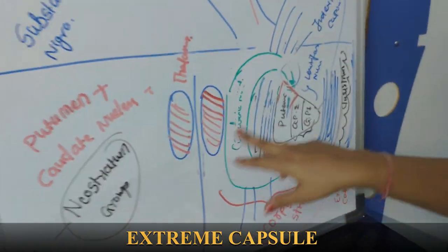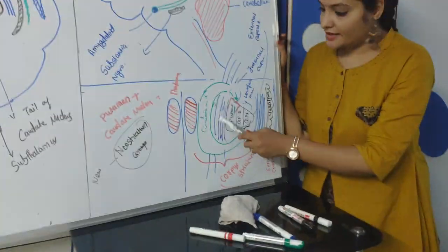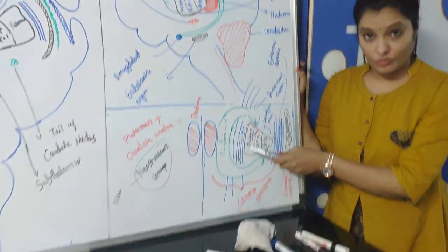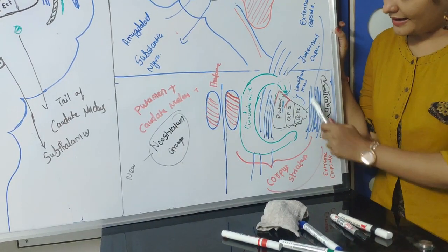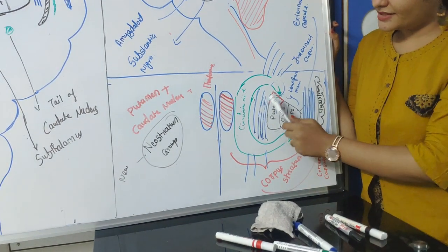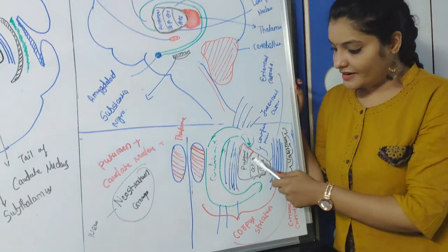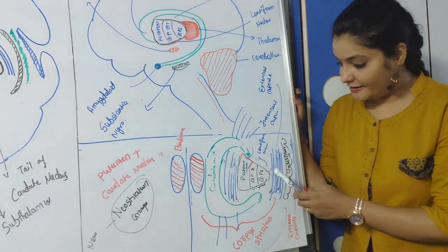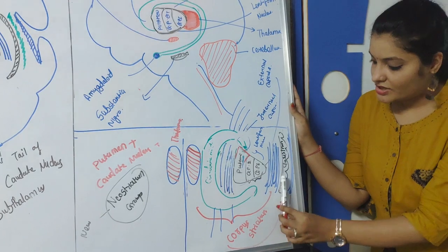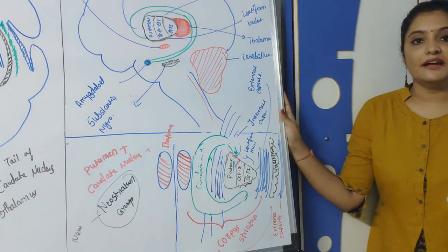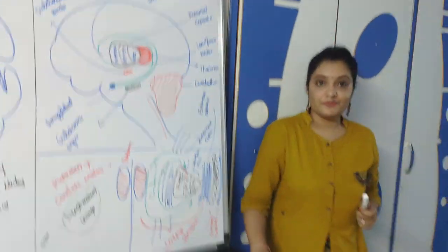To summarize the arrangement: first thalamus, then lateral to thalamus is Caudate Nucleus; then Internal Capsule (Chatur) which separates Caudate Nucleus and Lentiform Nucleus; then Lentiform Nucleus divided into Putamen and Globus Pallidus (external and internal); then External Capsule; then Claustrum; and Claustrum is surrounded by the Extreme Capsule.